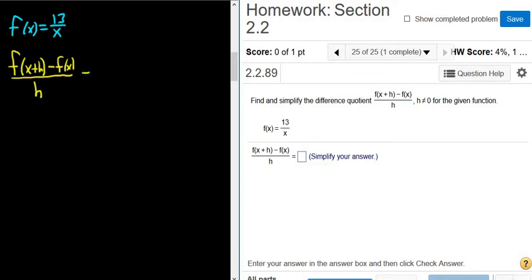The first thing we do is evaluate f of x plus h. That basically means we replace all of the x's in our function with x plus h, so it'll be 13 over x plus h. This whole piece here is f of x plus h.